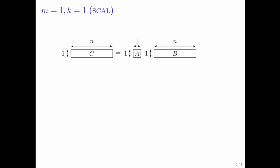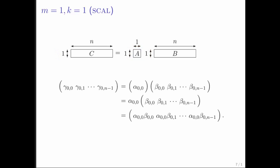What if m is 1 and k is equal to 1? Then C has only one row, A has only one row and one column, and B has only one row. A typical entry in the row vector C is computed as that scalar A times the corresponding entry in B. This is very much like a scalar times a vector, except the vector happens to be a row vector.